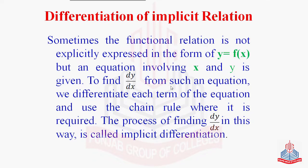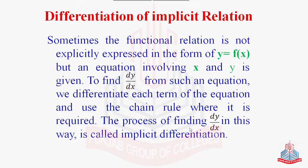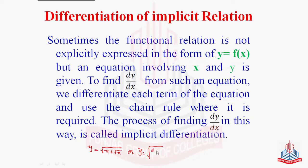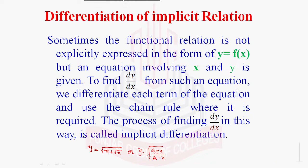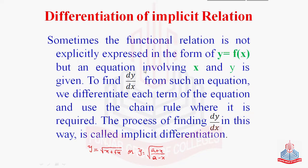To find dy/dx from such an equation, we differentiate each term of the equation and use the chain rule where required. This process is called implicit differentiation. In simple words, unlike y = √x or y = √((a+x)/(a-x)), where y is explicitly defined in terms of x, in implicit differentiation there is no y expressed in terms of x — only an equation involving both x and y.